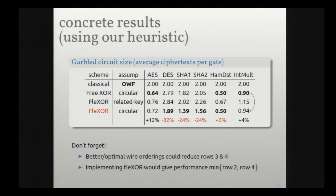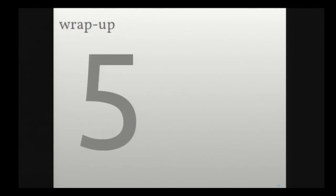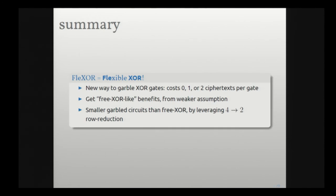If you implement FlexOR, it collapses to free XOR in a natural way, so you don't have to choose between the two — FlexOR will automatically give you the minimum of free XOR and the FlexOR result. It subsumes free XOR entirely. In summary: we present a new way to garble XOR gates costing zero, one, or two ciphertexts per gate. One instantiation avoids the troublesome circularity assumption of free XOR; another instantiation often gives smaller garbled circuits than free XOR. Thank you.